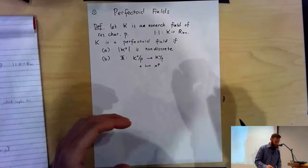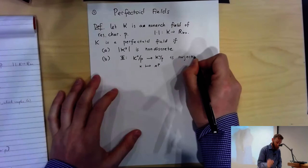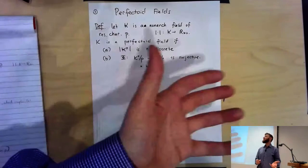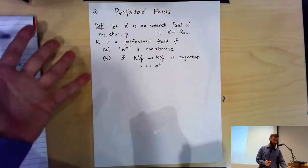I want this map to be surjective. So elements of K-zero — you can extract P-th roots from them, at least modulo P. And this is true for the field Q_P as well, but part A excludes Q_P from being a perfectoid field.